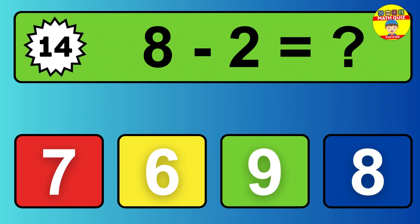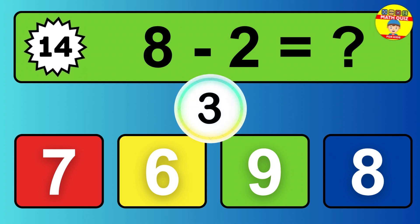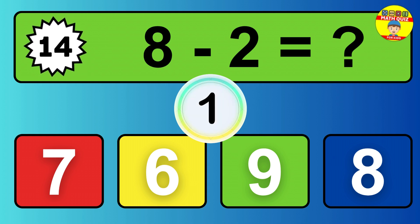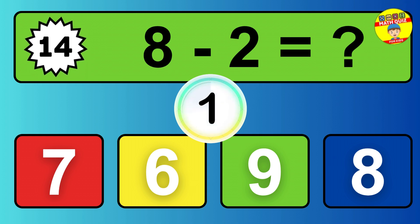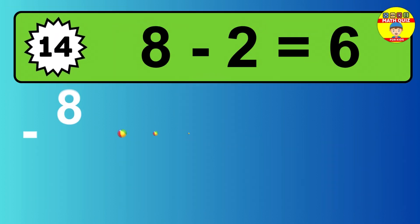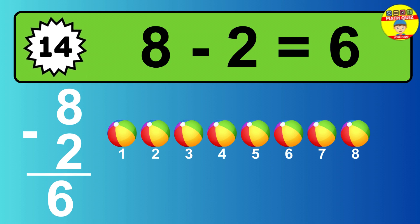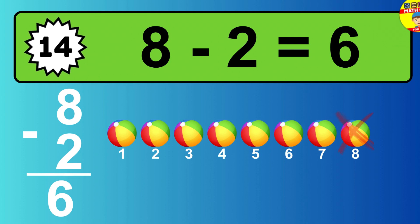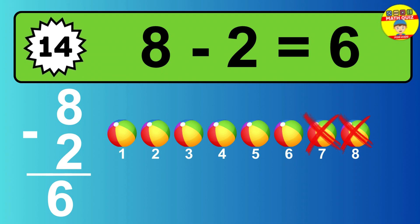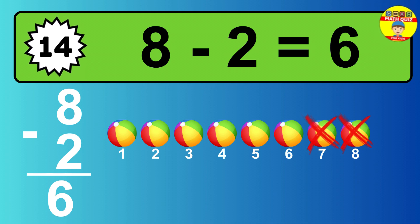Question fourteen. Eight minus two equals what? So the answer is, eight minus two is six. Let's count it. One, two, three, four, five, six.